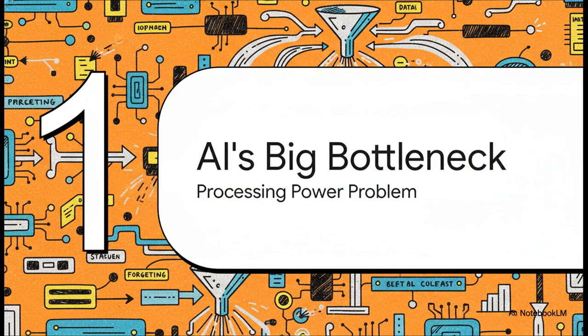But here's the catch. That brilliant mechanism? It has a critical flaw. Because as the amount of information you feed it grows, it creates this massive processing power bottleneck.